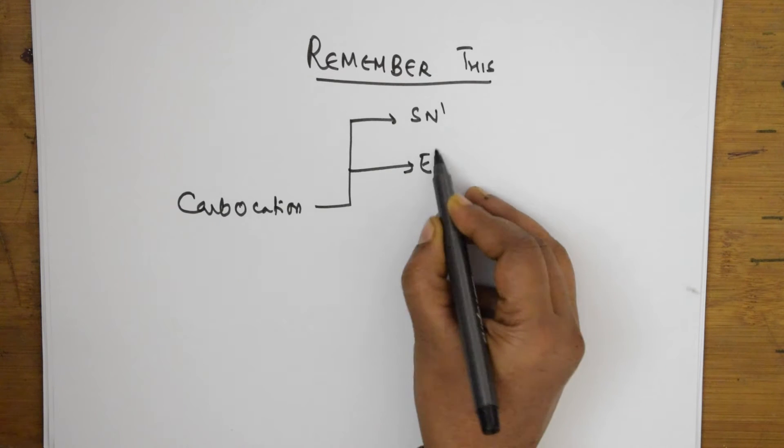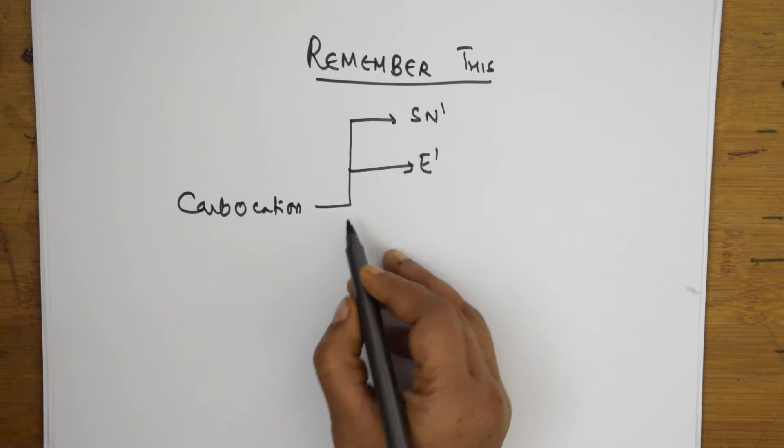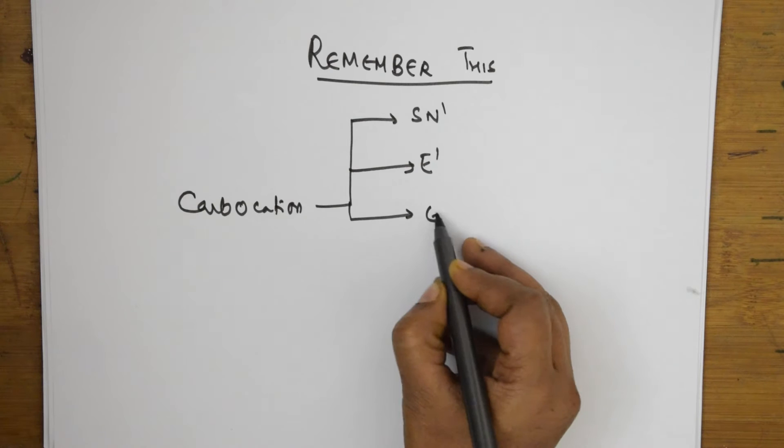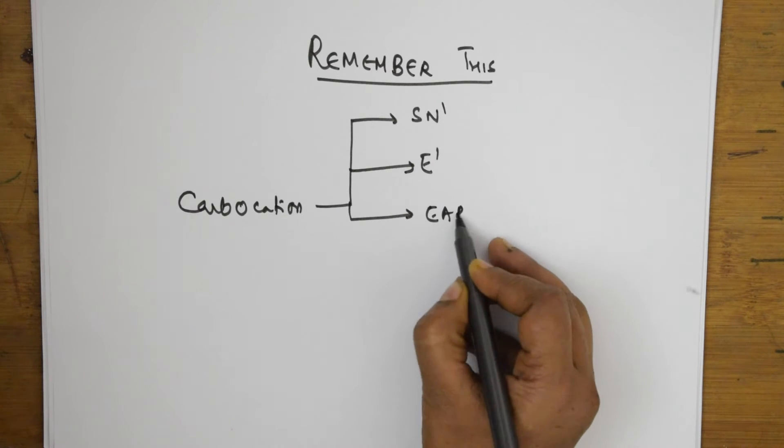Carbocations are formed in E1 reactions. They are also formed in electrophilic addition reactions like electrophilic addition molecular reactions.